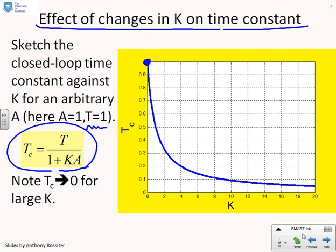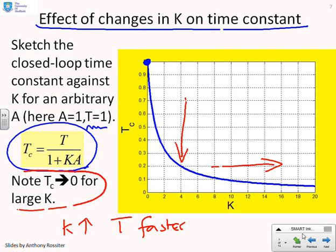As K increases, my time constant reduces. In other words, as K goes up, T gets faster. As you increase the proportional gain, the closed-loop system gets a faster time constant, and you can see that for very large K, the time constant will tend to 0.